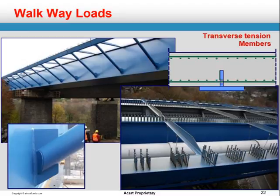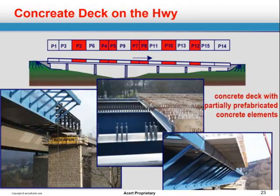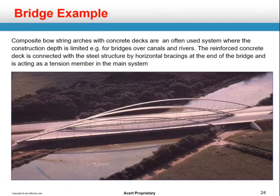The inside structure shows how the tension members work and how you can overlay your concrete with the composites. Composite bowstring arches with concrete decks are often used where the construction depth is limited — for example, bridges over canals and rivers. These can be done very quickly because of the properties and toughness of the composite material.